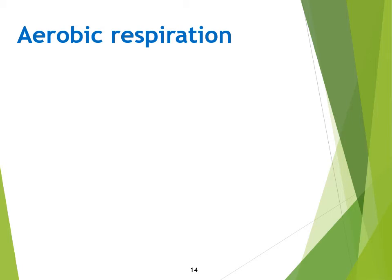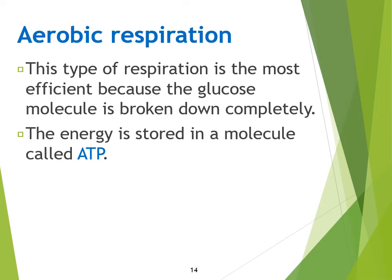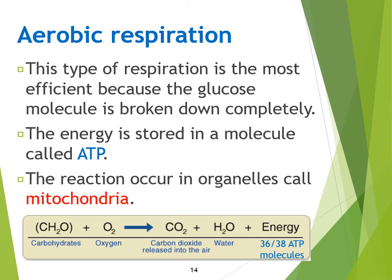In aerobic respiration, this is the most efficient type for breaking down glucose or using up the sugars, because we break it down completely. The energy is stored in a molecule we call ATP — as you remember from photosynthesis, you can store energy in ATP. In aerobic respiration you get about 36 to 38 ATP molecules per reaction, so that's a lot of energy. This happens in an organelle inside the cell called the mitochondria.